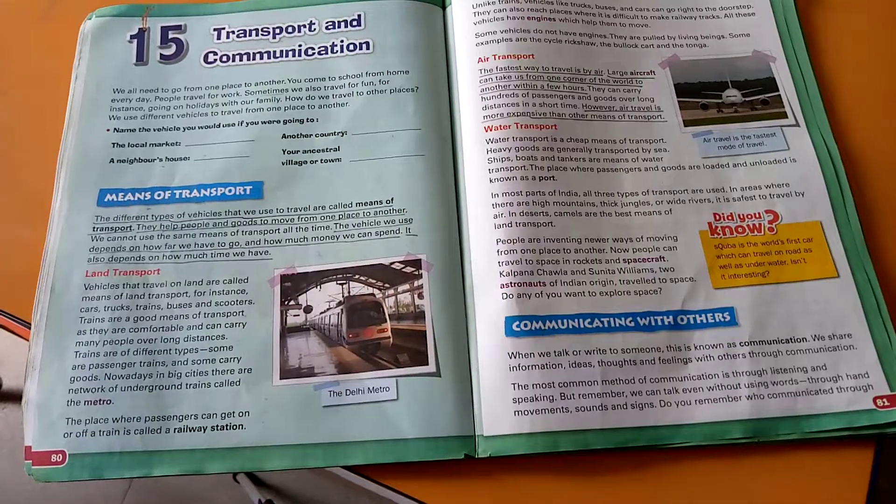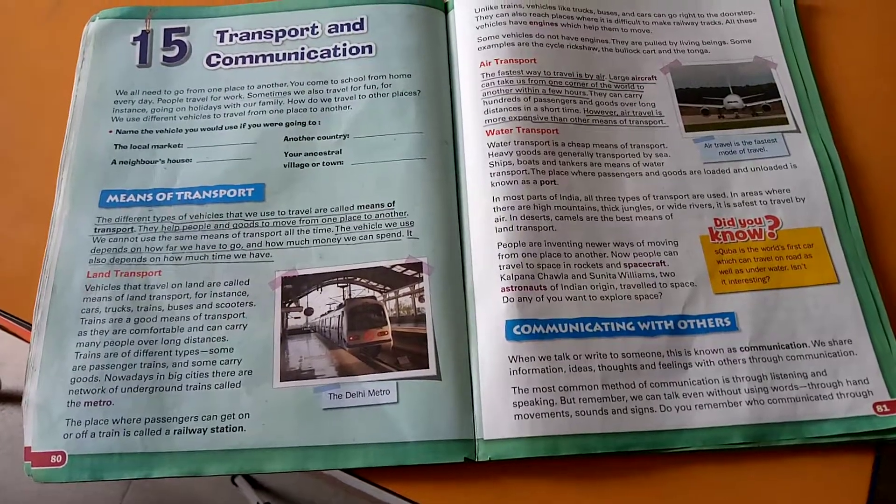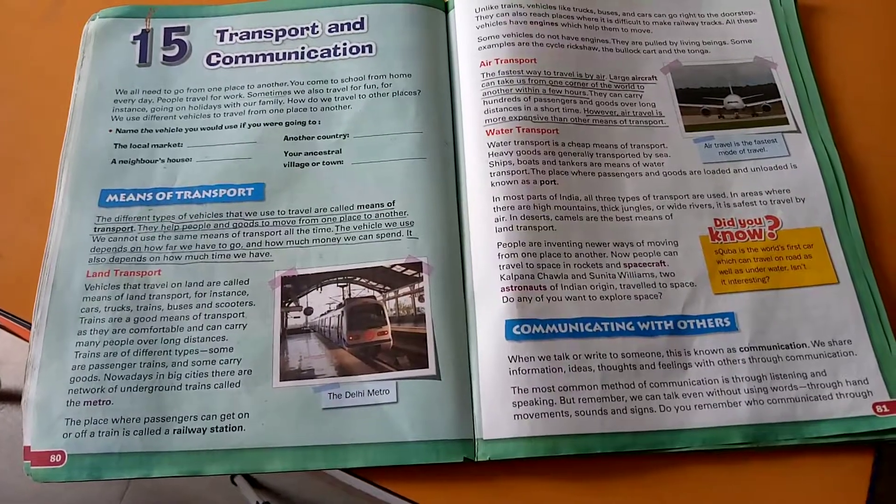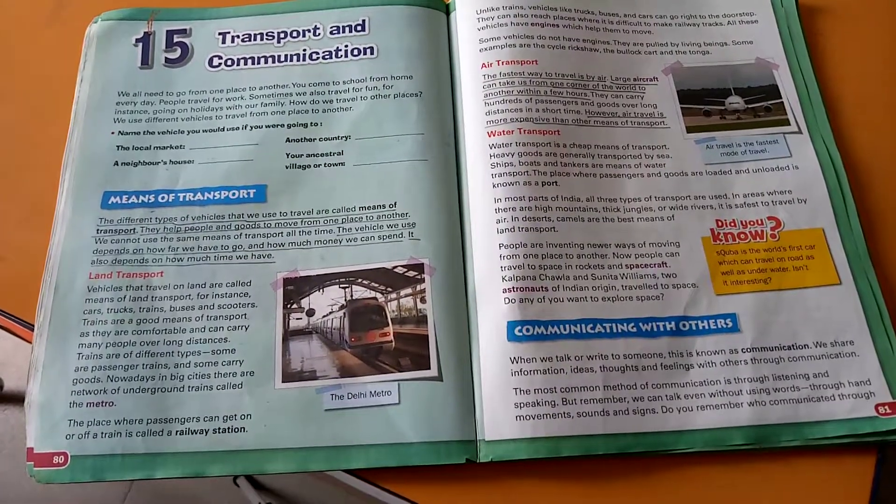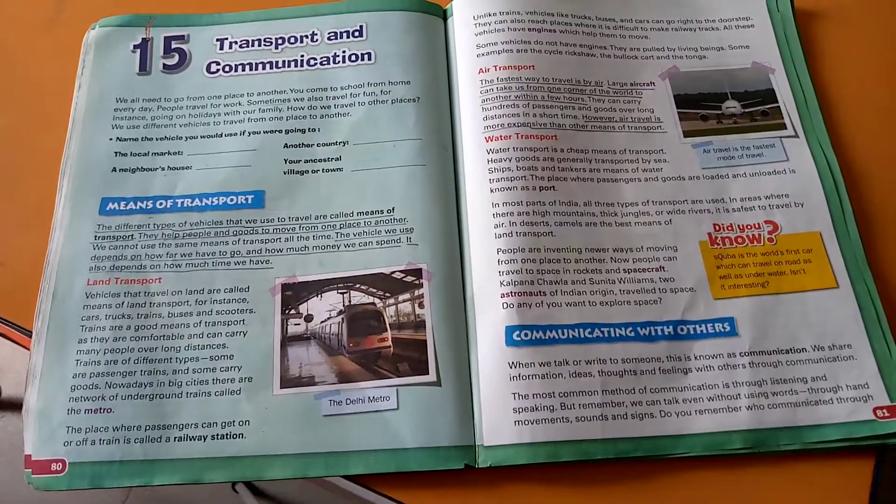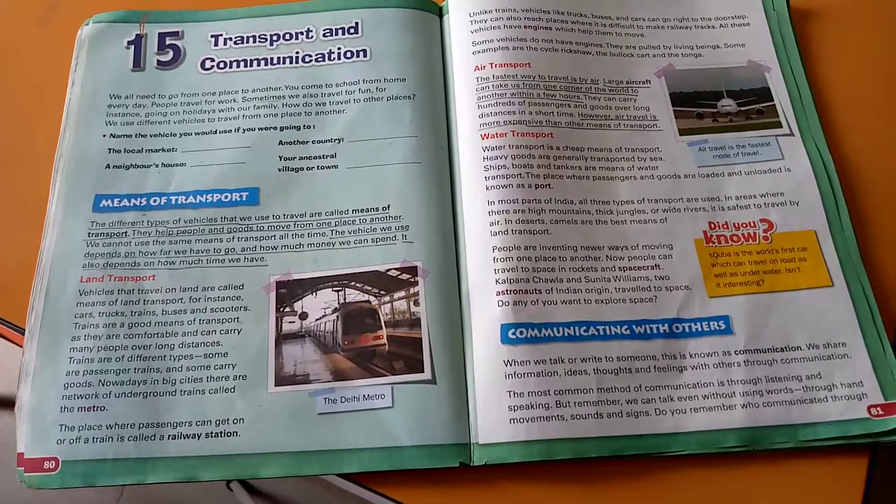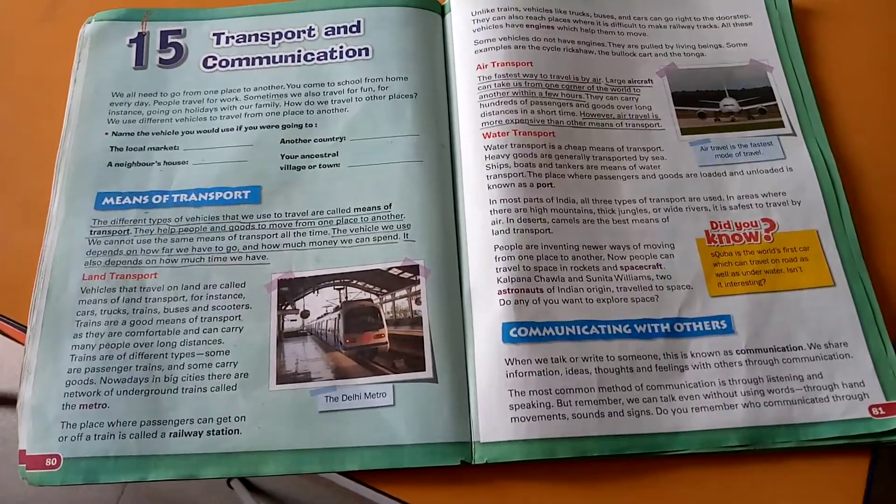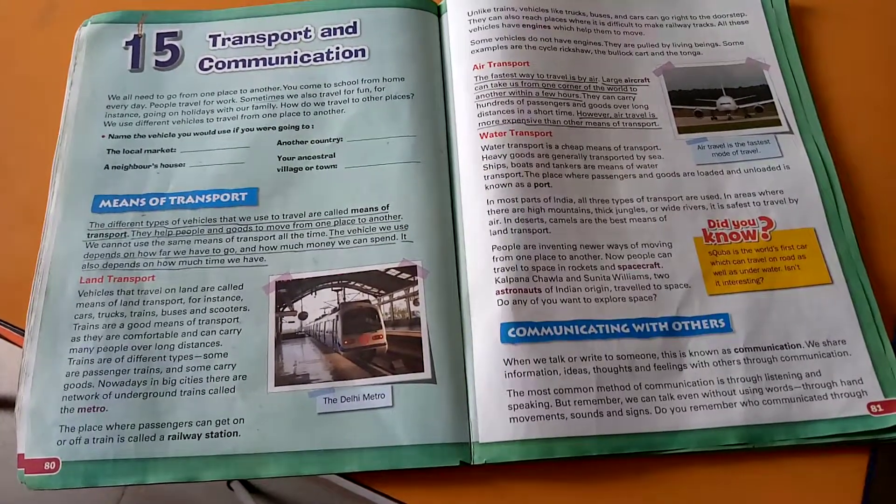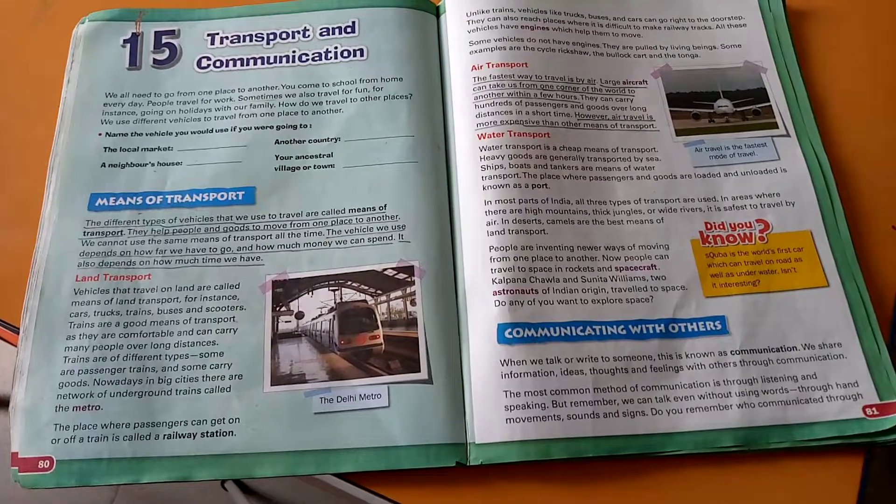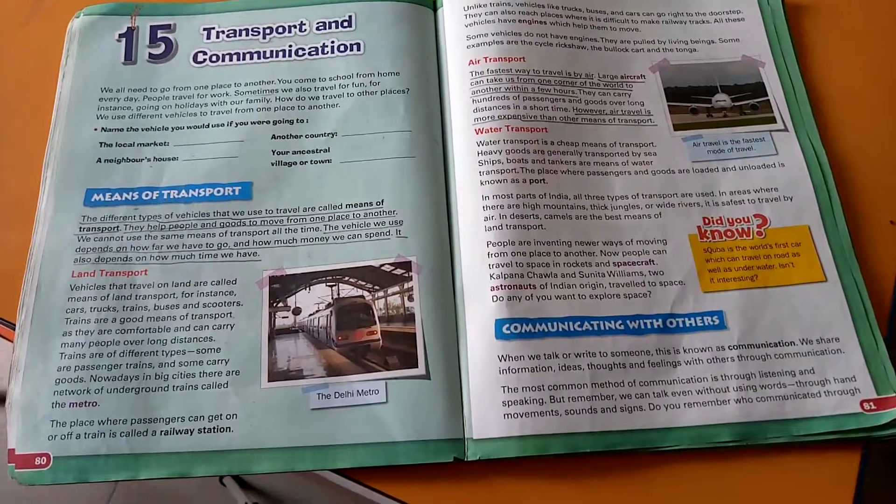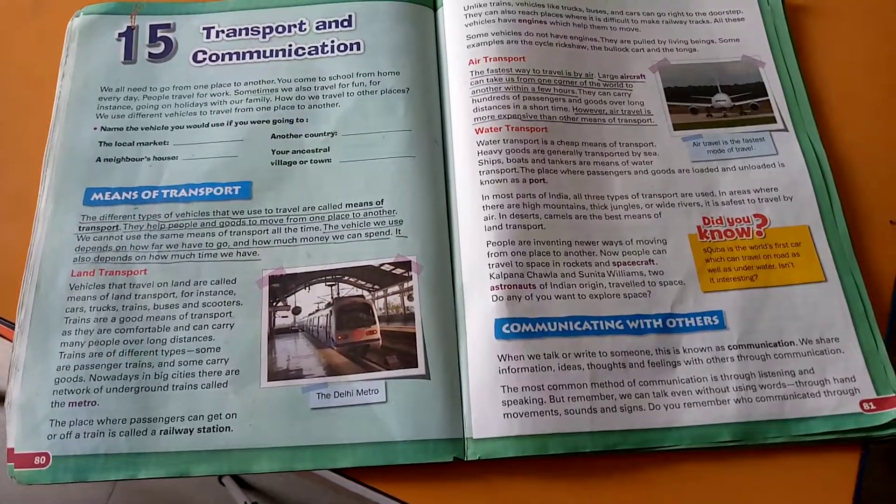Land transport is the most common means of transport. Water transport is the cheapest means of transport and it is very useful to carry heavy goods. And air transport is the fastest means of transport and it is very expensive.